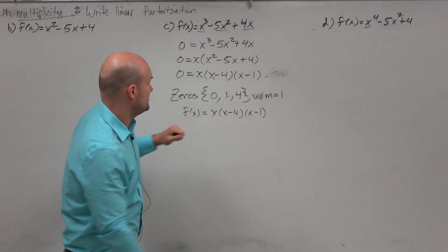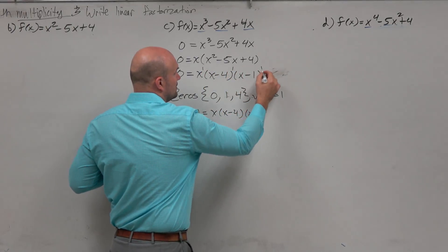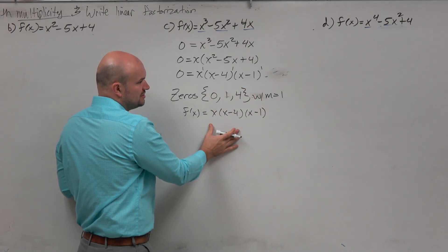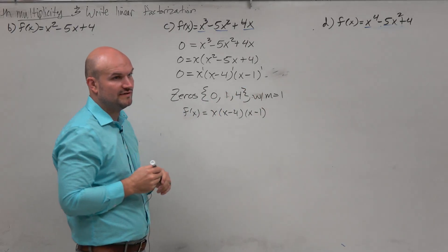Zeros with the multiplicity. Because again, all of these have a power of 1, right? So that's why the multiplicity is there. And then you can list the zeros, make sure you label the multiplicity, and then you can write the linear factorization.